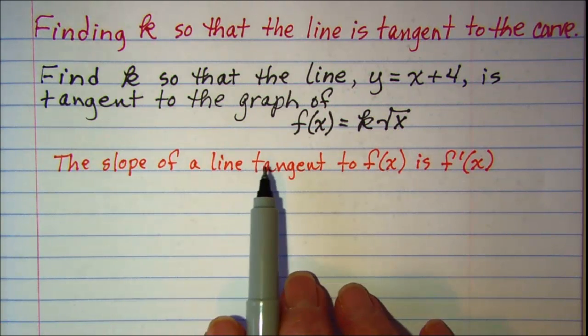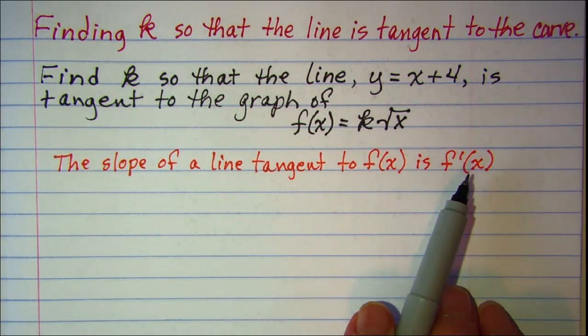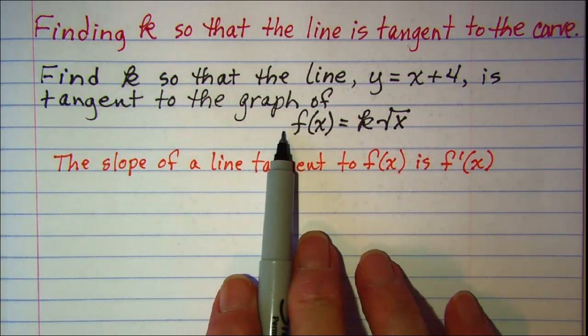Now we know that the slope of a line tangent to the function is the derivative of that function, so we need to find the derivative of this function first.